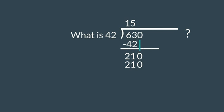5 times 2 equals 10. 5 times 40 equals 200. So I get 210. Let's subtract again. 210 minus 210 and you have nothing left. 42 goes into 630 15 times.